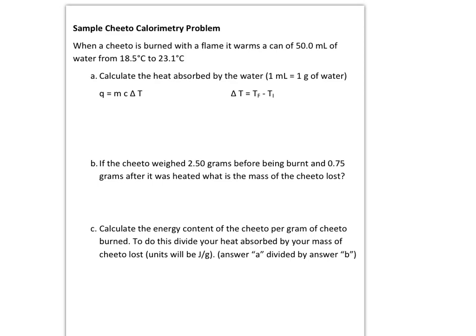I'm going to show you how to find the energy of a Cheeto using this lab data. The first thing to note is I have 50 milliliters of water that I'm going to use, and I know that there is one milliliter for every one gram of water. So when I use this first formula, Q equals M, my M is actually going to be 50 grams of water.